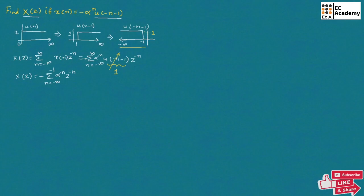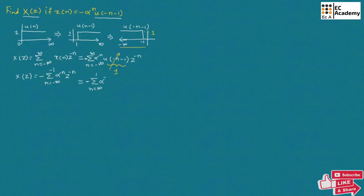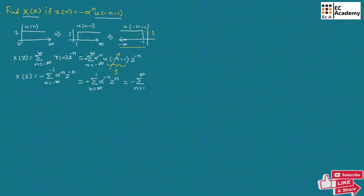Now, to simplify our calculation, let us change the sign of summation. We will take minus summation of N is equal to infinity to 1, and at that case we need to change the sign of the power of alpha. So we write alpha to the power of minus N, Z to the power of N. Instead of taking summation from infinity to 1, let us take summation from 1 to infinity — both are the same. So we can write this as summation of N is equal to 1 to infinity, alpha to the power of minus N, Z to the power of N.